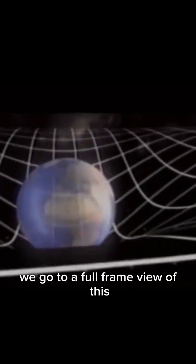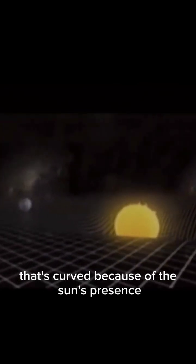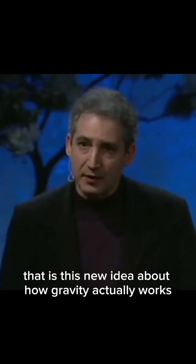If we go to a full frame view of this, the earth itself is kept in orbit because it rolls along a valley in the environment that's curved because of the sun's presence. That is this new idea about how gravity actually works.